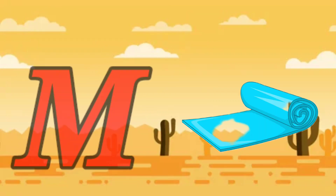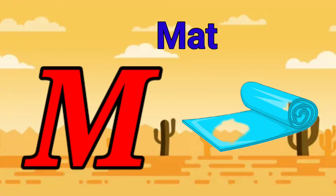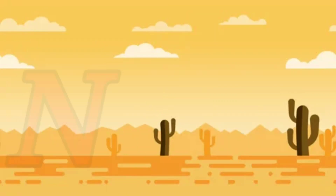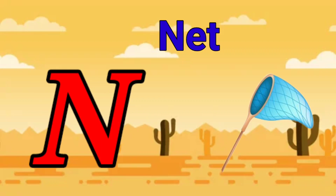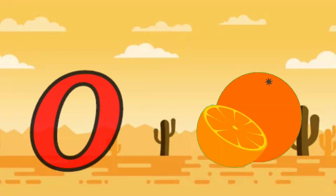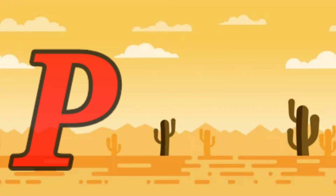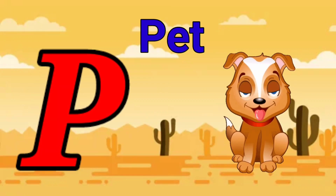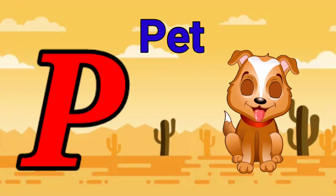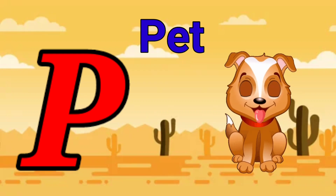M is for mat, m-m-mat. N is for net, n-n-net. O is for orange, o-o-orange. P is for pet, p-p-pet.